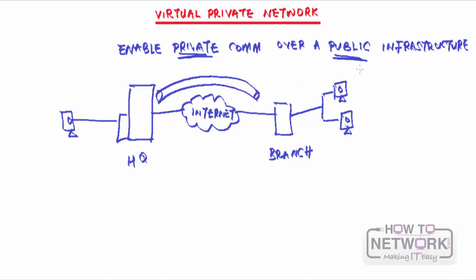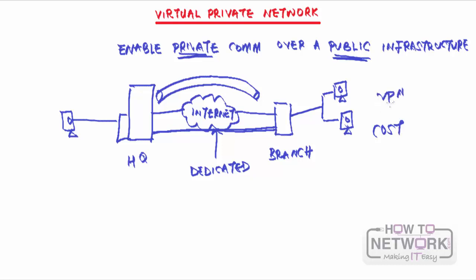Why do you have to go through a public infrastructure? Because sometimes it may not be cost effective to connect the HQ and the branch through a dedicated line — that may be too expensive. Even a leased circuit could also be expensive. So you're just going to use public infrastructure. Everybody usually needs access to the internet, so you already have that public infrastructure and you are using it as the underlying mechanism by which you can communicate. Cost is one of the reasons why we use VPN.